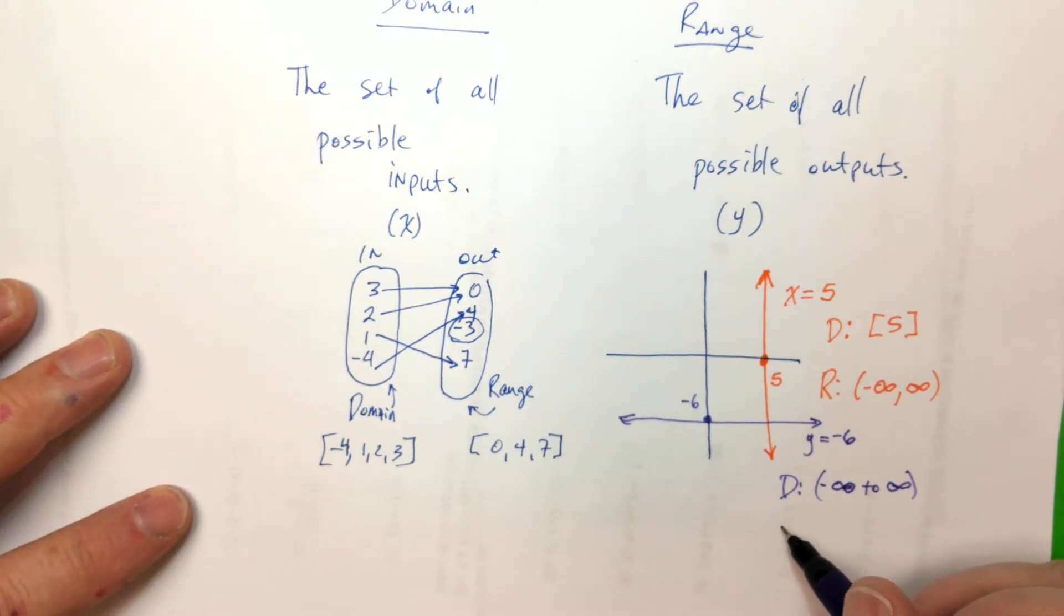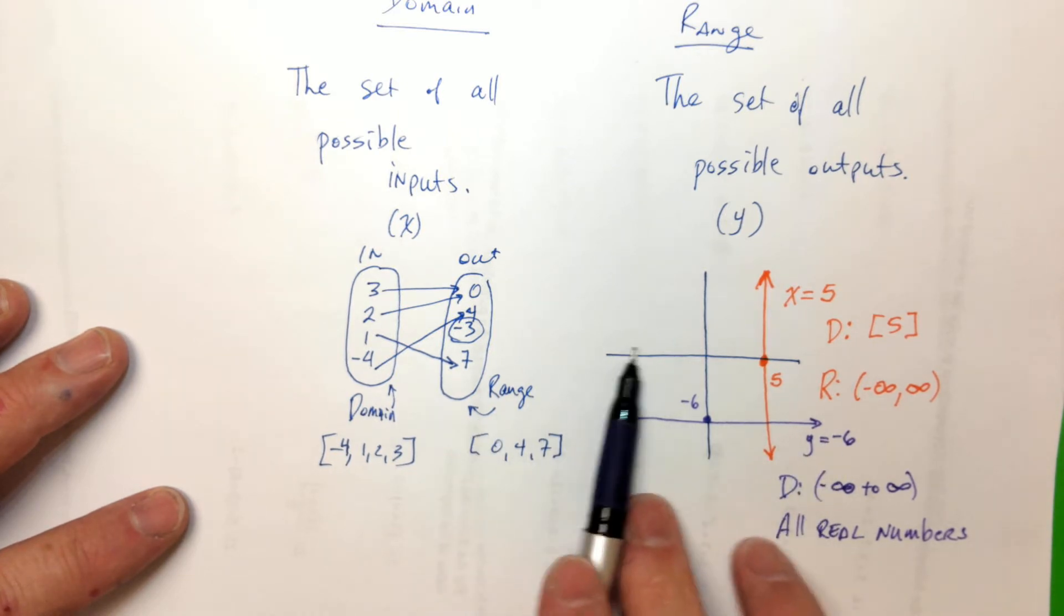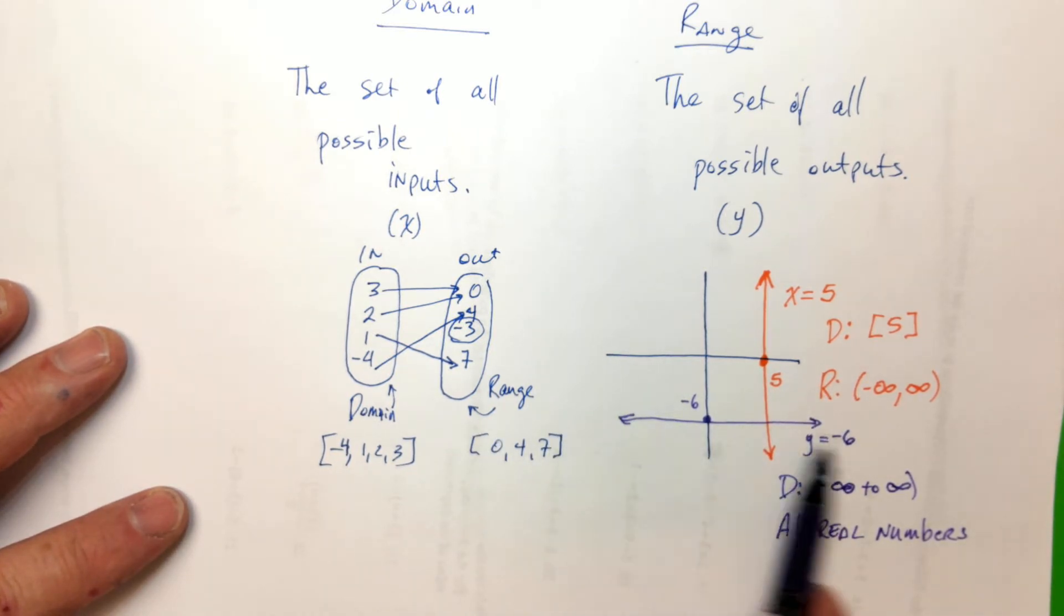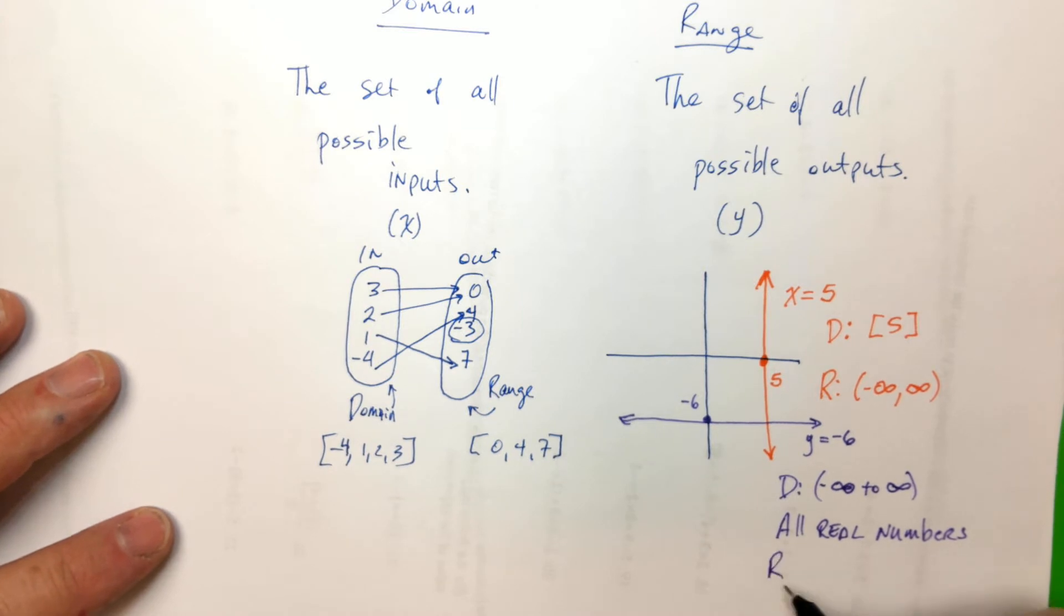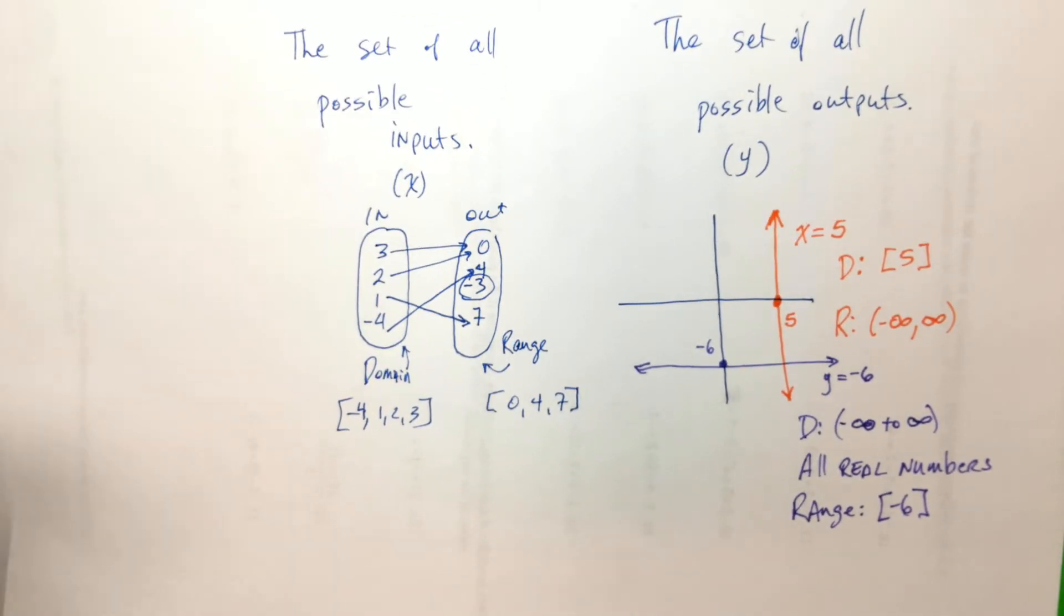For me, for right now, you could even write all real numbers. Or the domain. Like every single number along the x-axis is covered here. But the range, the range is just negative 6. That's it. It's just negative 6. There's no other output.